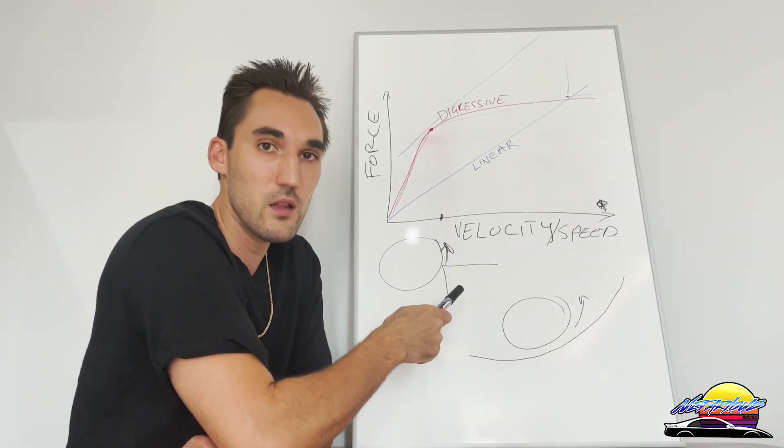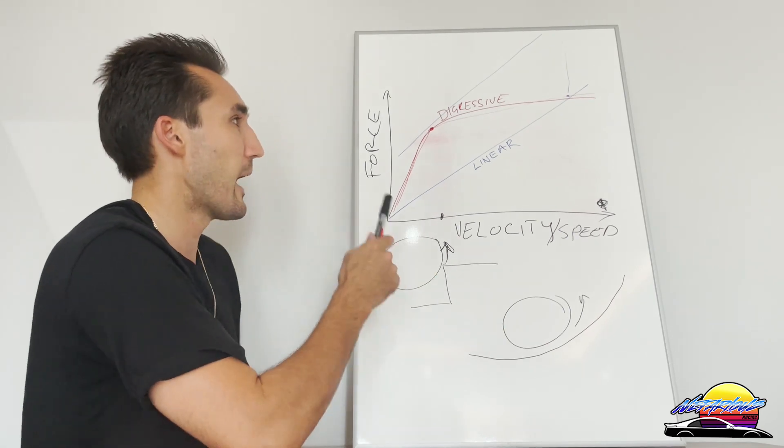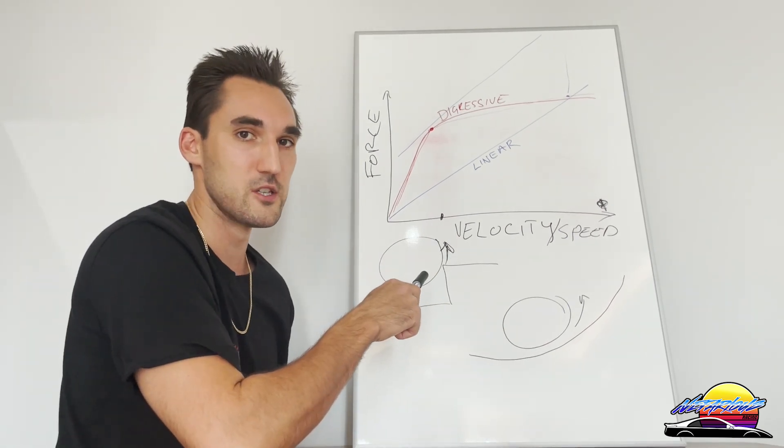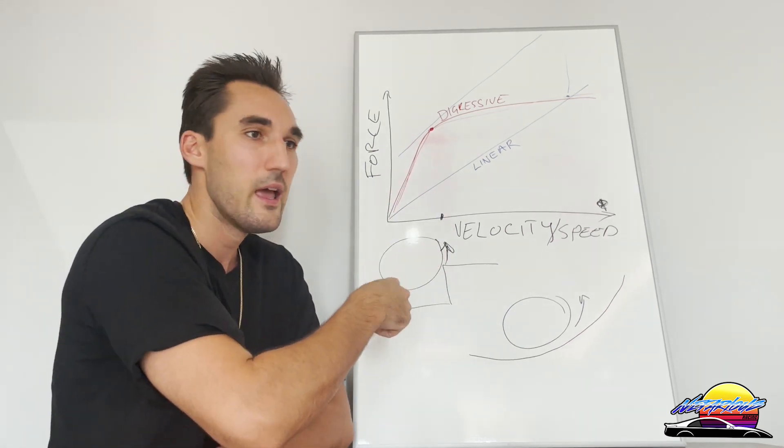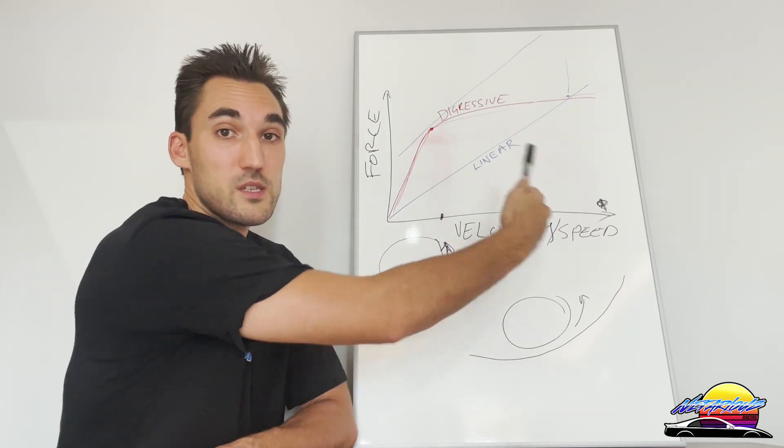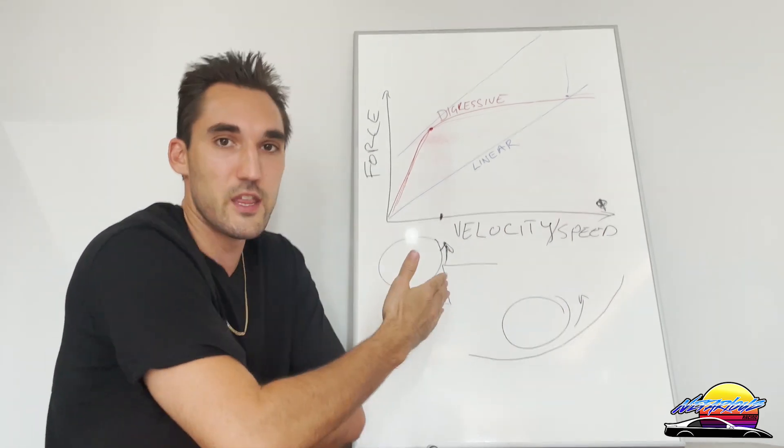The other thing to note is that linear can be used for the track as well—there's nothing wrong with it. At that point, it becomes personal preference. Some people prefer linear damping for the track, some prefer digressive. For the purpose of this video, if you can't decide, the safe bet is linear because you can use it for both, whereas digressive is typically more toward the motorsport side.